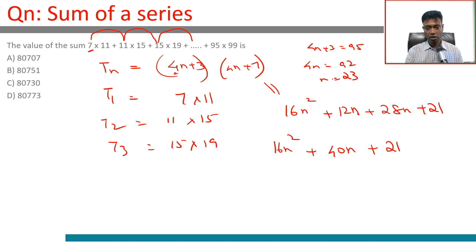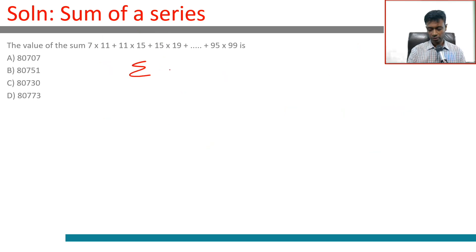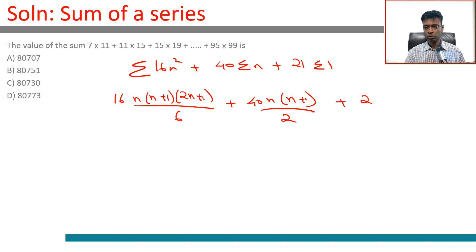We are looking to do summation of 16n square plus 40 times summation n plus 21 times summation 1, going from 1 to 23. We know the formula: 16 times n into n plus 1 into 2n plus 1 by 6, plus 40 times n into n plus 1 by 2, plus 21 times n, when n is equal to 23.